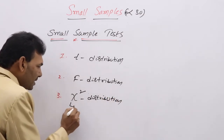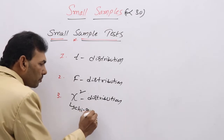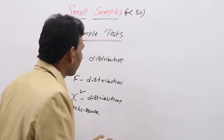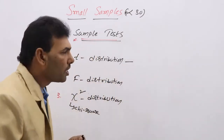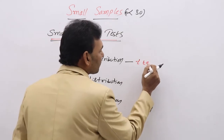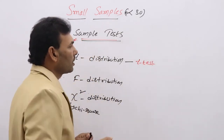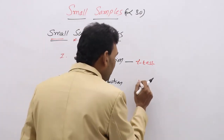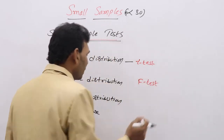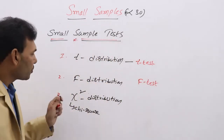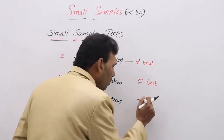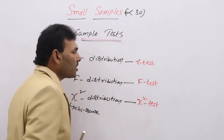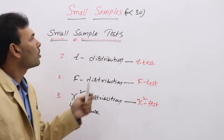We read this one as chi-square. Testing small samples using T-distribution is called T-test. Testing small samples using F-distribution is called F-test. Testing small samples using chi-square distribution is called chi-square test. These three types of tests we are going to use to test the small samples.